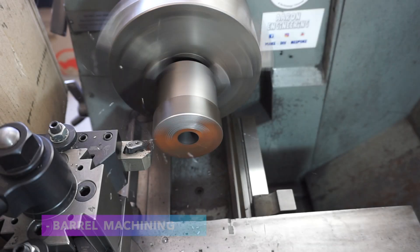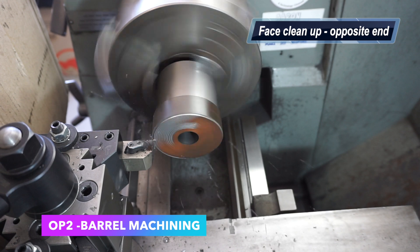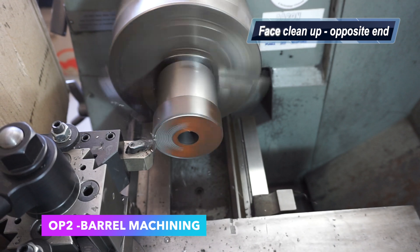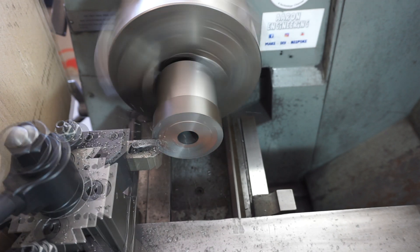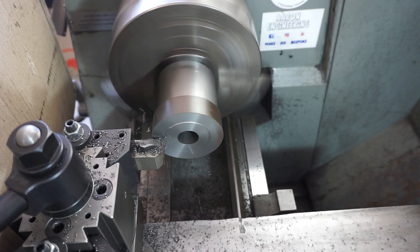I've flipped the cast now in the three-jaw chuck and this is operation 2. This is where I'll be doing the majority of the machining, all the facing, parallel turning, and boring so everything's concentric.